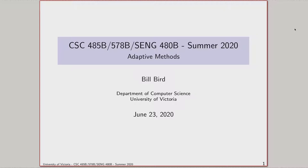I want to talk about this just enough that you could employ such a thing on assignment three if you want to, and I really encourage you to do so because it's an extremely powerful technique. At the very end of this, we'll touch on a scheme called PPM, which is a competitor to the LZ family — a clever way of having the encoder and decoder collude to find efficient ways of representing symbols.